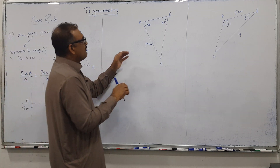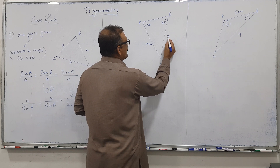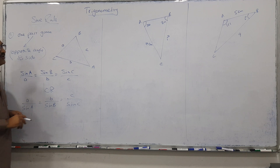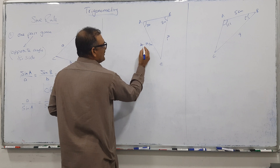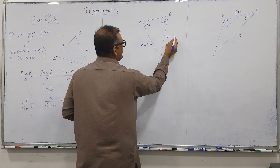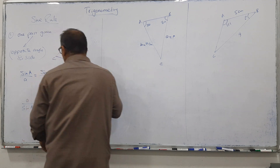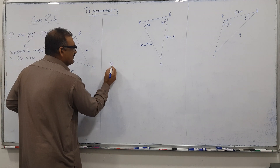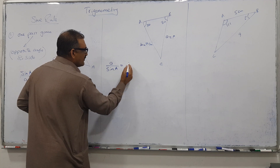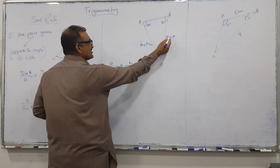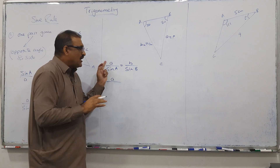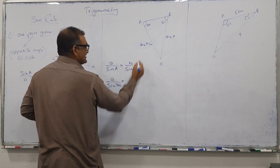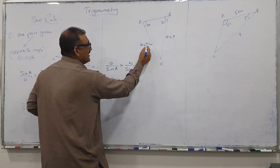For example, if we need to find a side, the side is the unknown. So I'll use the lower form with the side on top. Here, the side in front of the angle is called small d... small a, so I'm looking for small a. Since a and b are linked, I'll use a over sin A equals b over sin B. Capital A is 70°, small b is 7, and capital B is 80°.